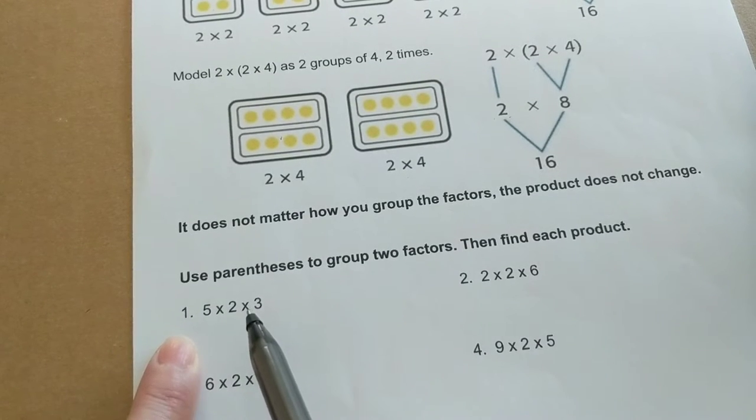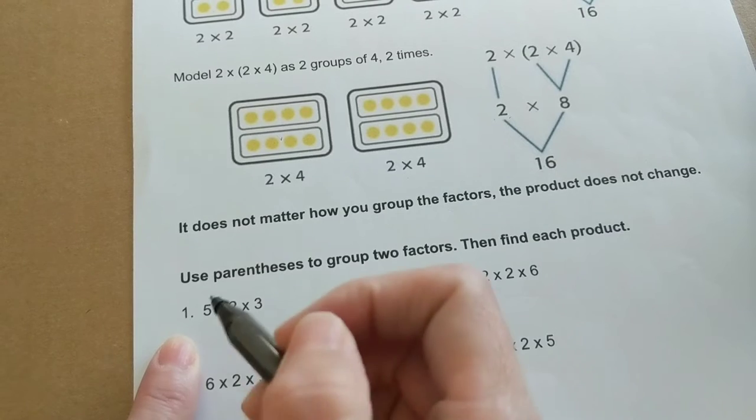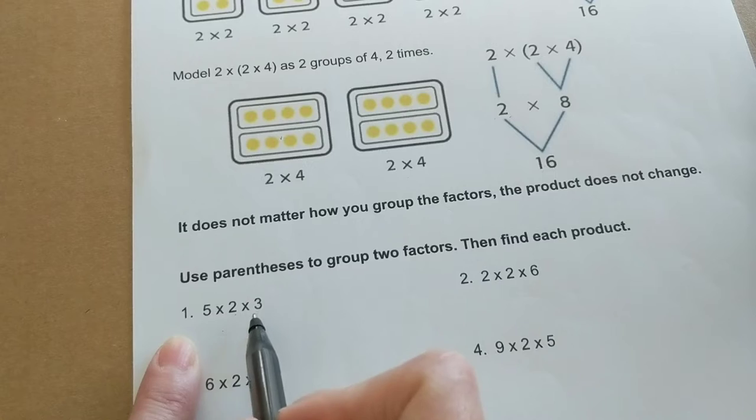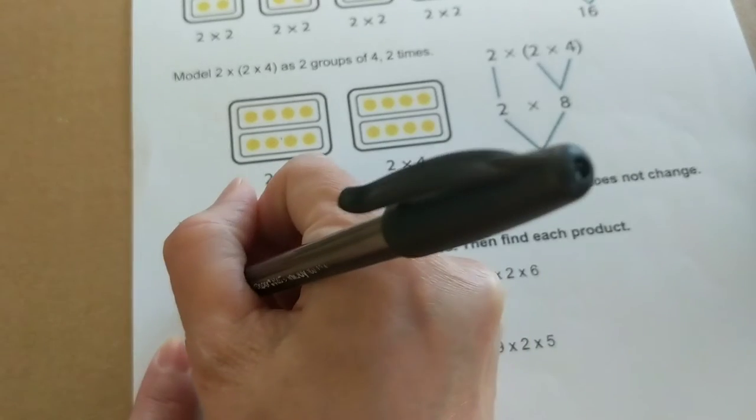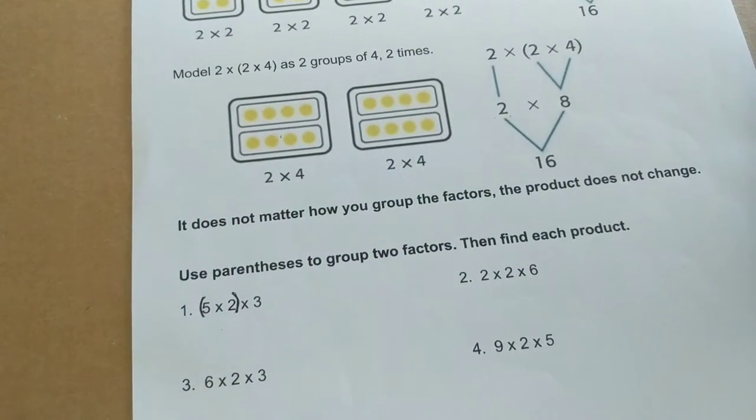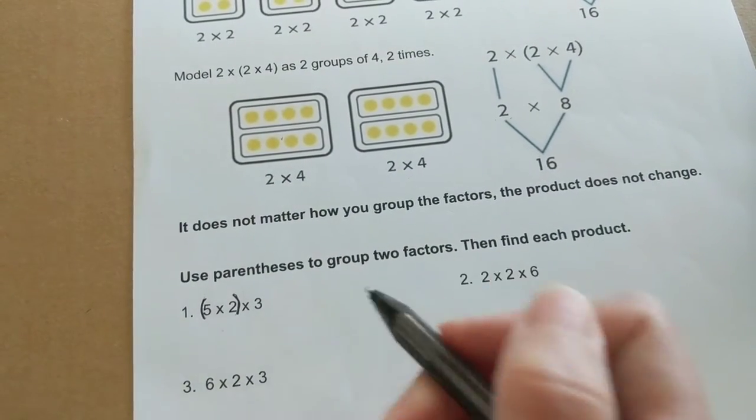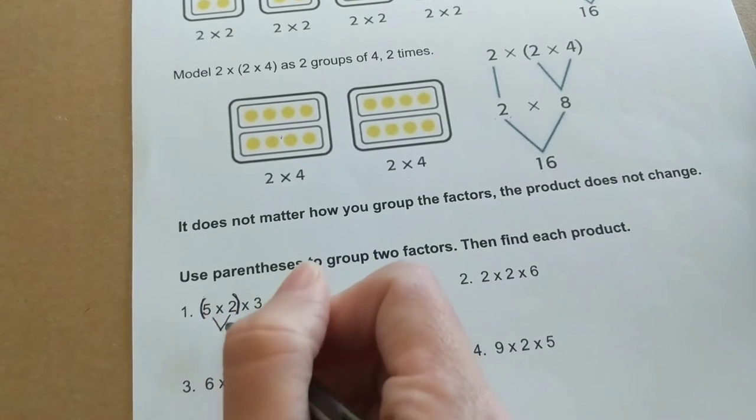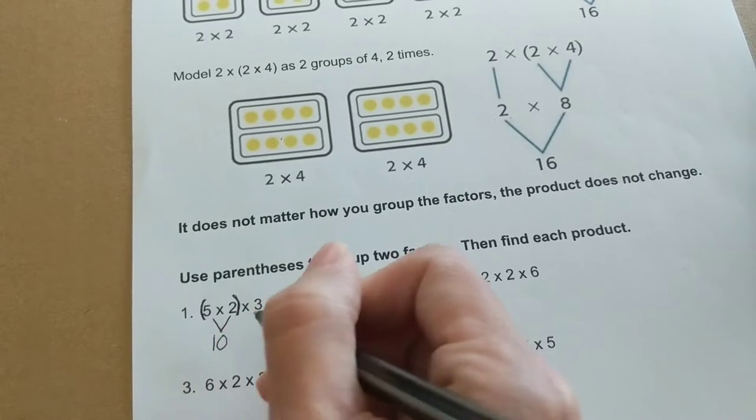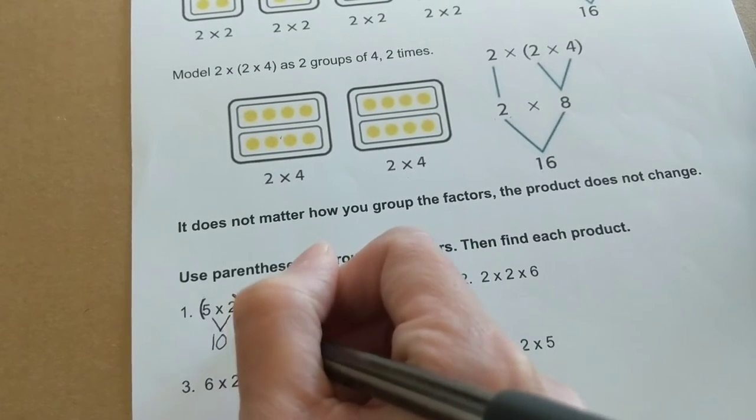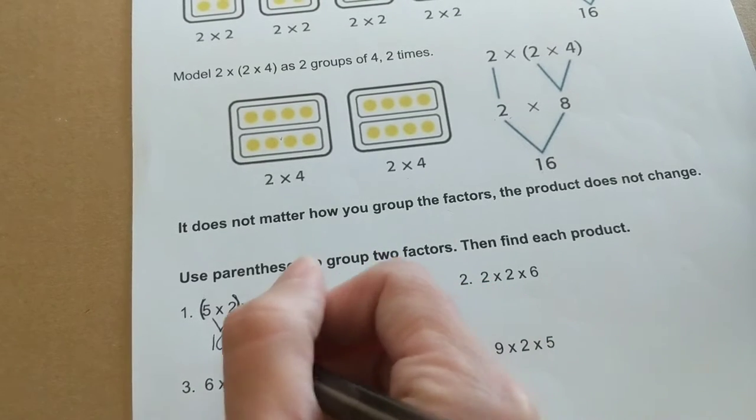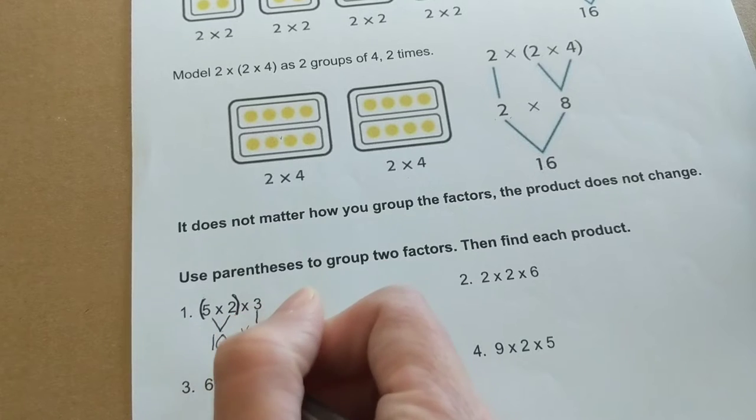So we're going to start with this five times two times three. I know if I multiply five times two, I get ten. And if I multiply two times three, I get six. I feel like starting using that five times two would be a little bit easier for me. So I'm going to multiply five times two to get ten. And then I'm going to bring down my three and multiply that ten times three. And ten times three is equal to 30.